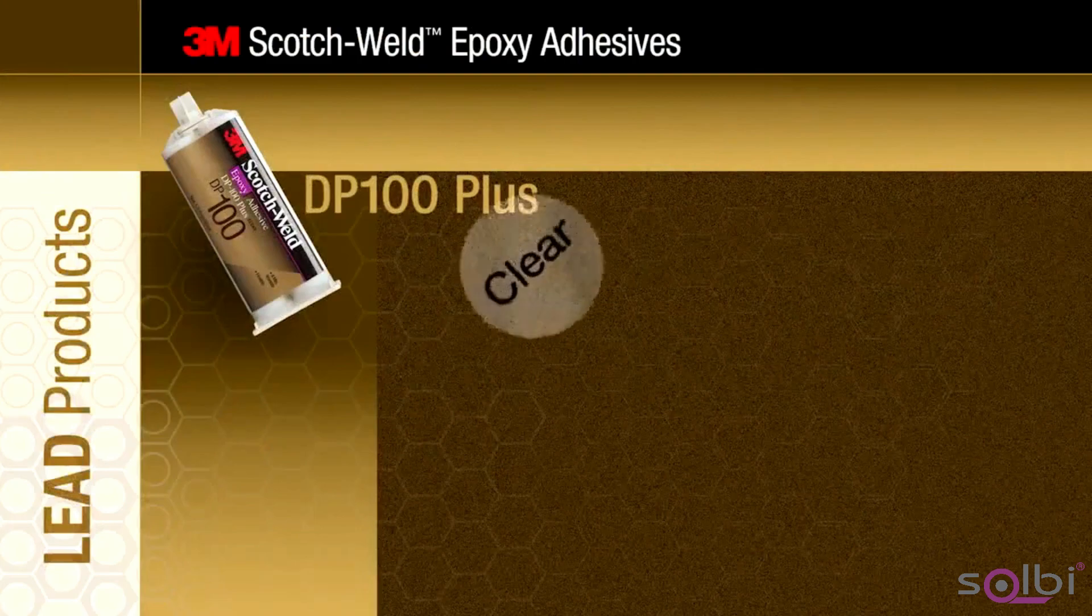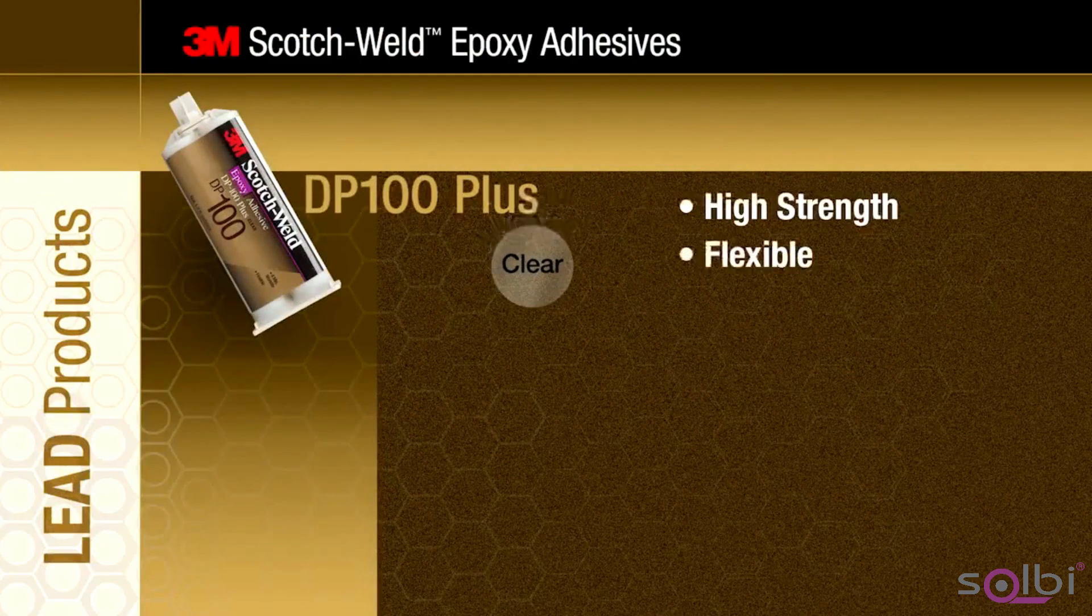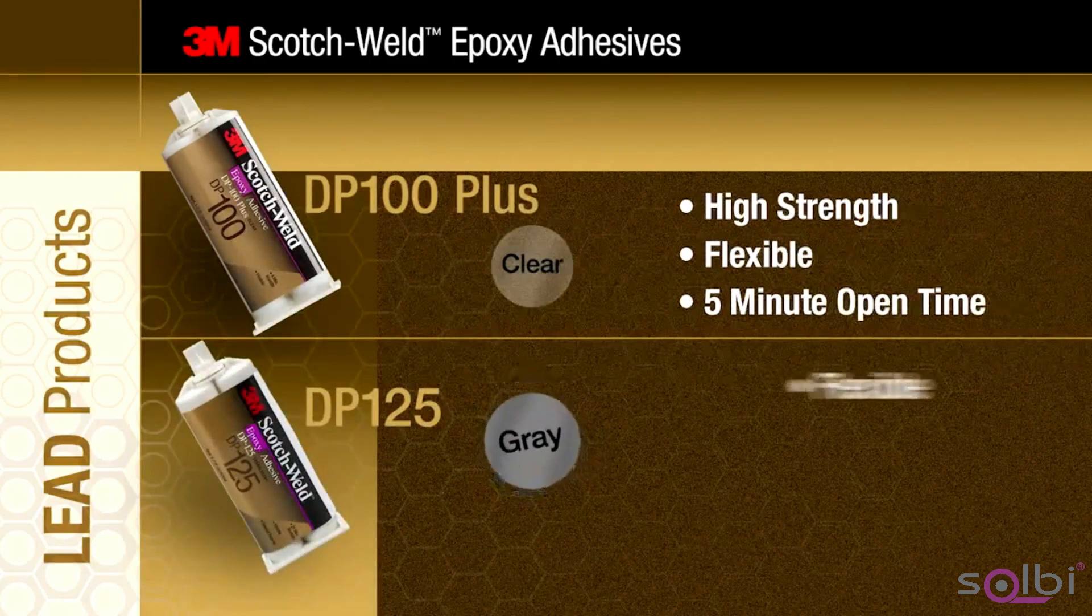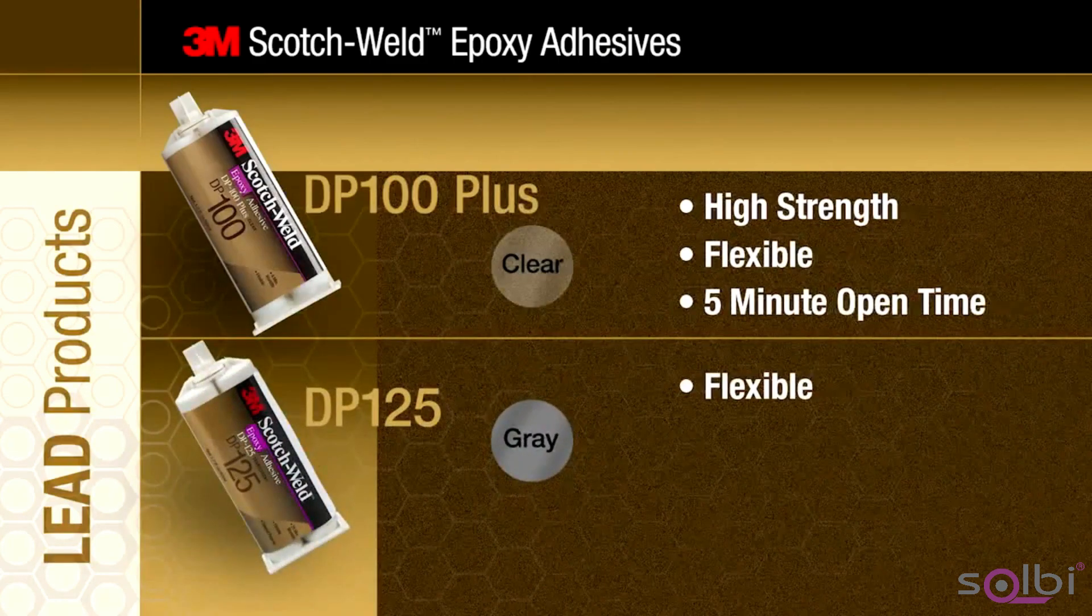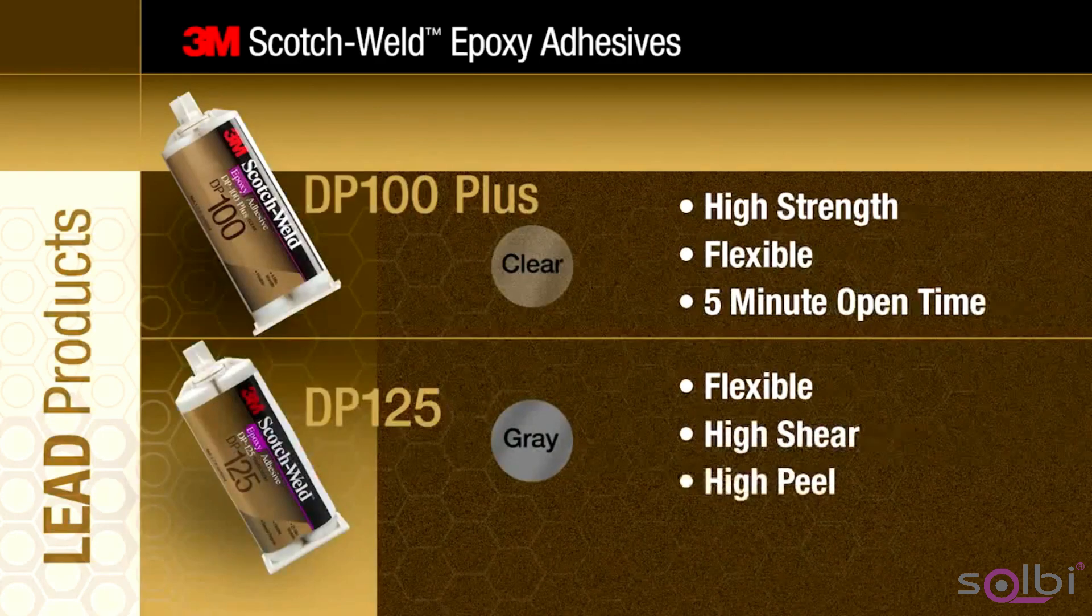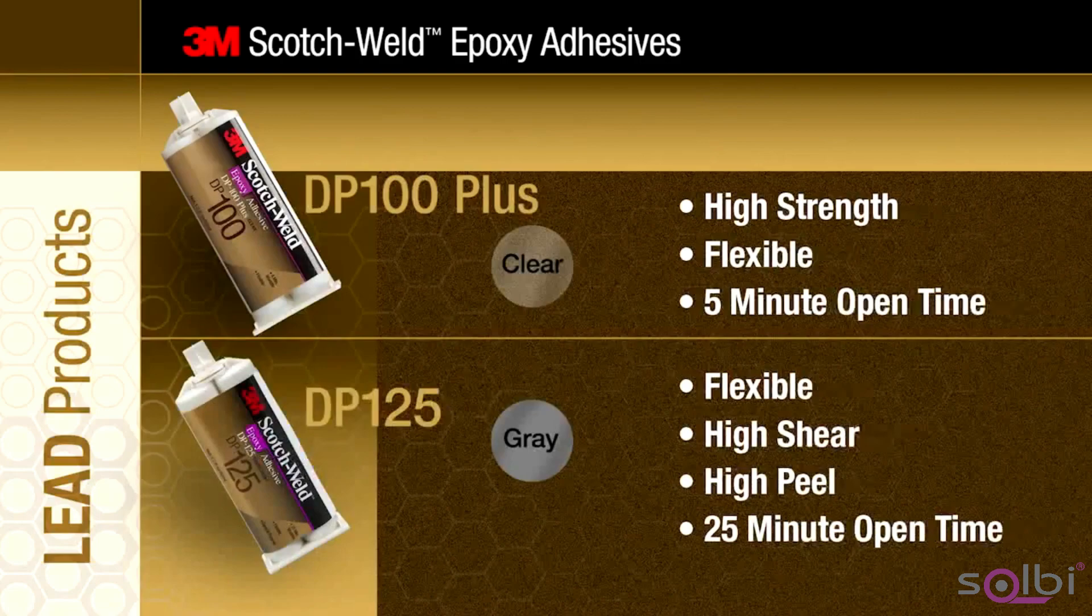DP100 Plus is a clear, high strength, flexible adhesive with a 5 minute open time. DP125 is a gray, flexible epoxy that bonds to most substrates including plastics. It's high shear, high peel, and is easy to apply with a 25 minute open time, allowing time for positioning.